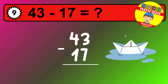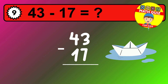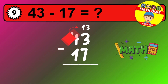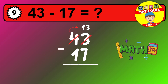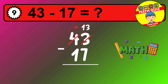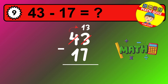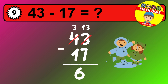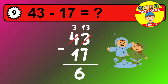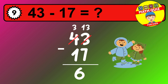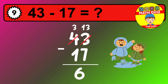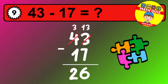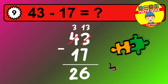Let's solve this step by step. We start with the units. 3 minus 7 is not possible, so we need to regroup. We take one 10 from the tens column. Now we have three tens and the units become 13. Now we subtract. 13 minus 7 is 6. Then we go to the tens. 3 minus 1 is 2. The final answer is 26.